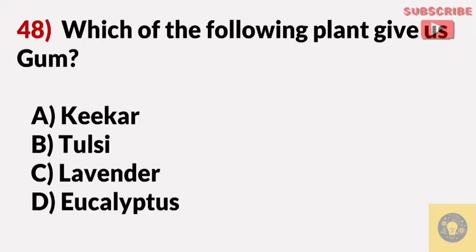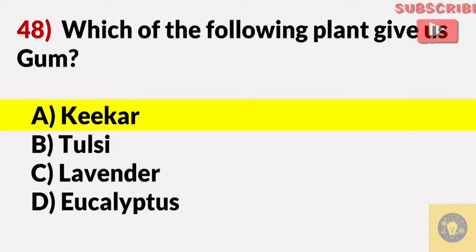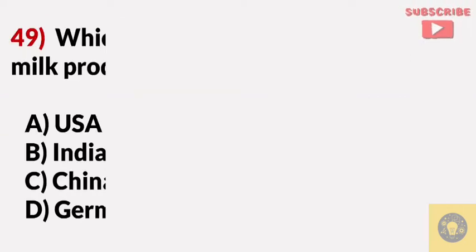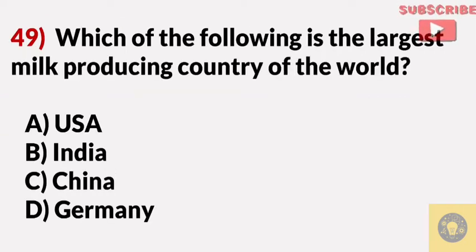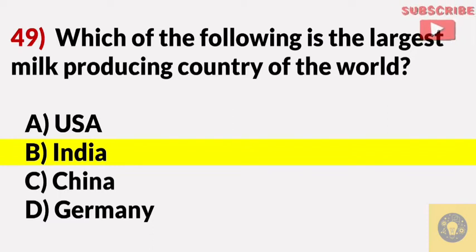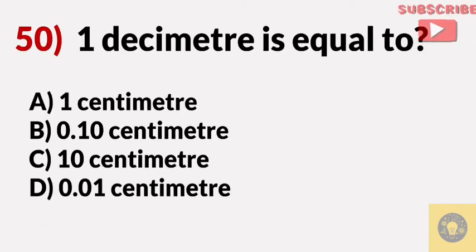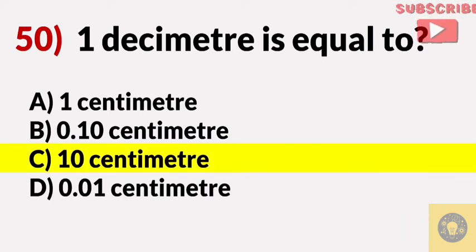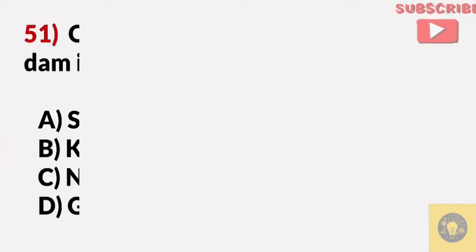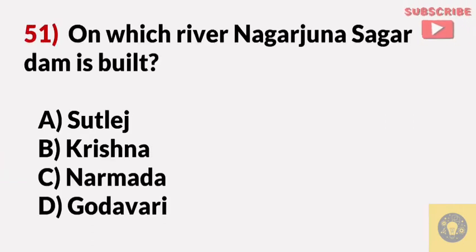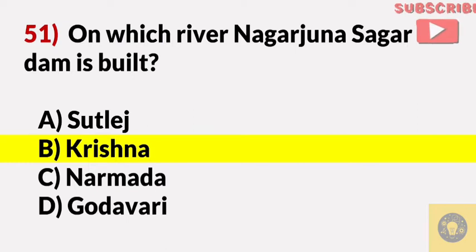Which of the following plants gives us gum? Answer A, Kikar. Which of the following is the largest milk-producing country in the world? Answer B, India. One decimeter is equal to? Answer C, ten centimeters. On which river is Nagarjuna Sagar Dam built? Answer B, Krishna.